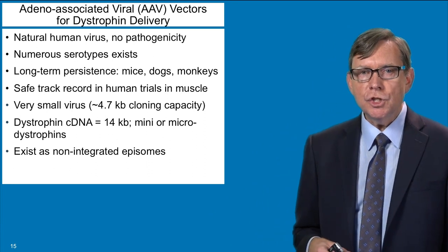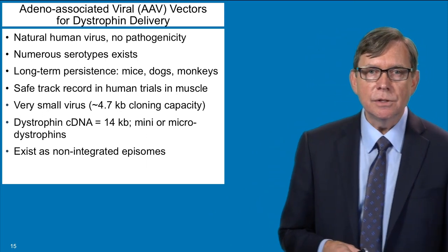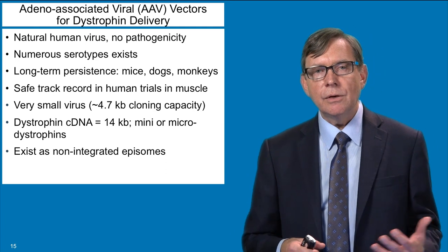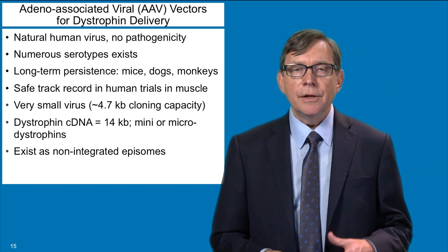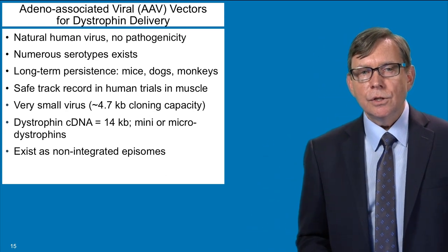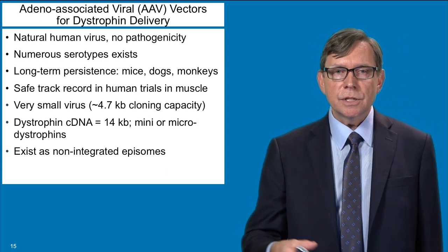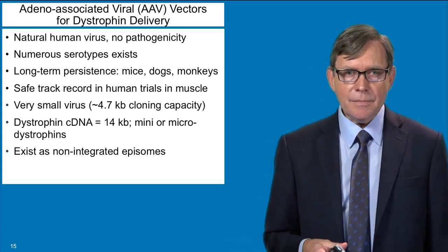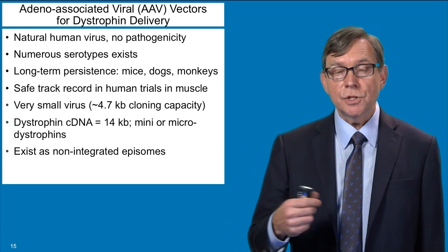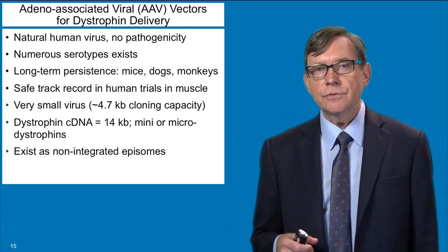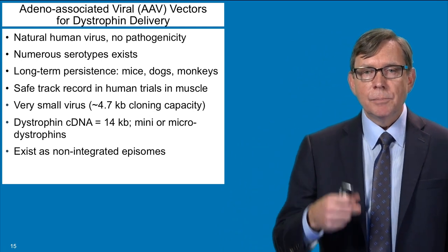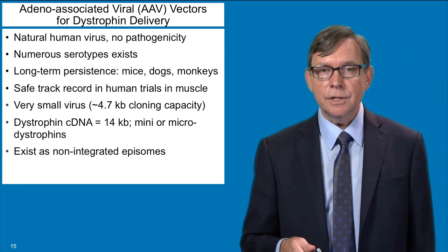How do you deliver those micro dystrophins? I mentioned the AAV shuttle vectors. AAV is a natural human virus, however it has never been shown to have any pathogenicity in the clinic — even though it's been found in many humans, it has not been linked to any diseases. There are many different types of AAV known as different serotypes. An advantage of this vector is that it's been shown that when you deliver new genes to a variety of organs in many different species, it will persist for years at a time. It's already entered into a variety of human clinical trials for muscle and other tissues, and it has a very safe track record so far. It is a small virus, so the delivery shuttles made from it can't hold the full-length dystrophin gene, but some of these micro dystrophins will fit into these vectors.